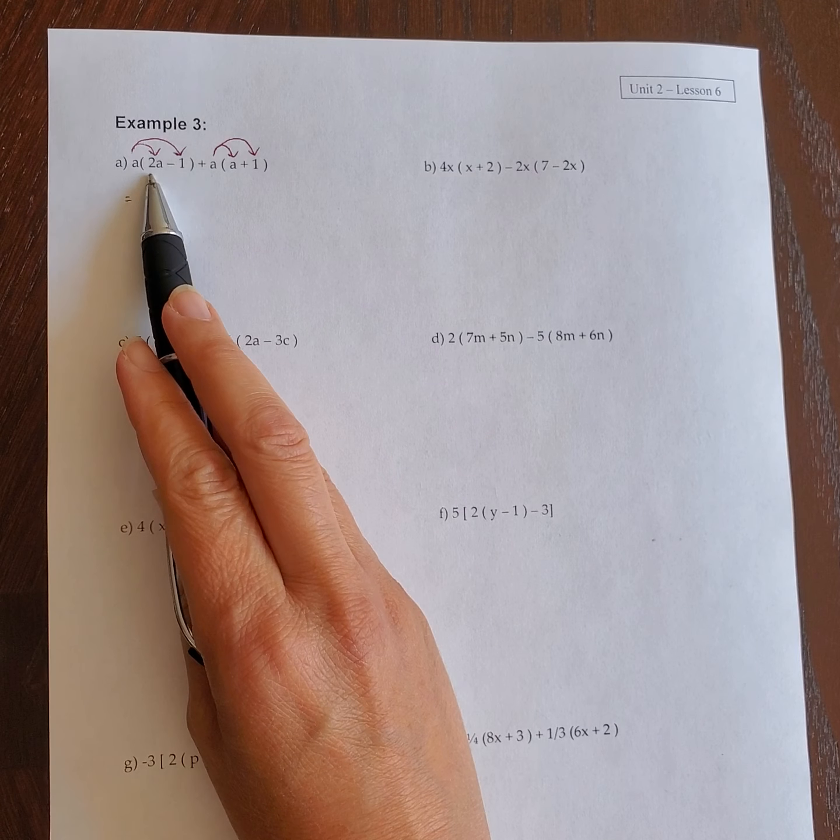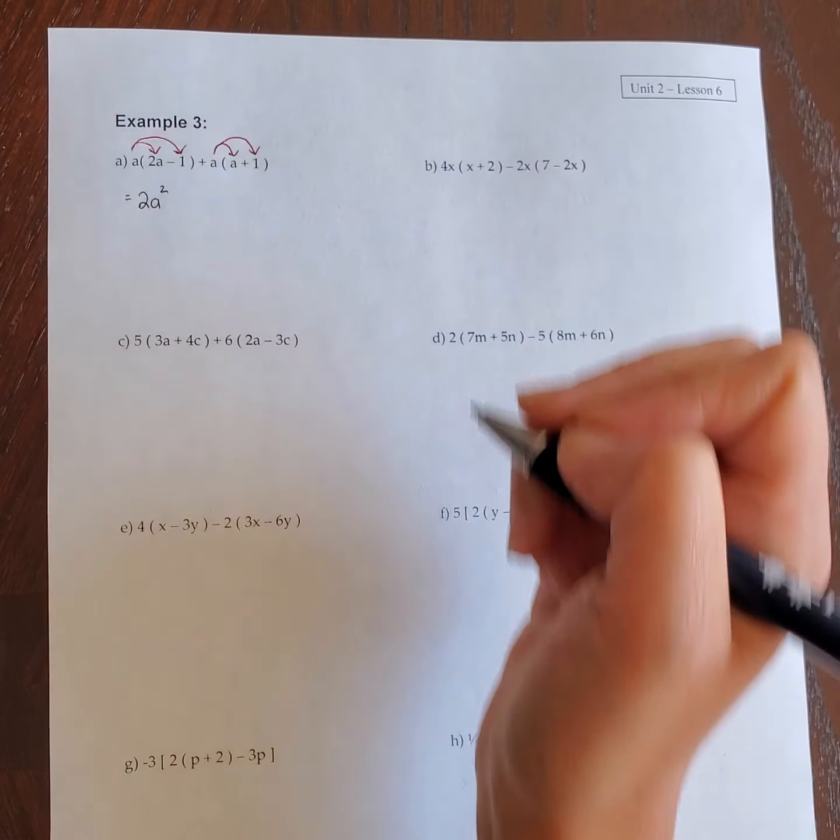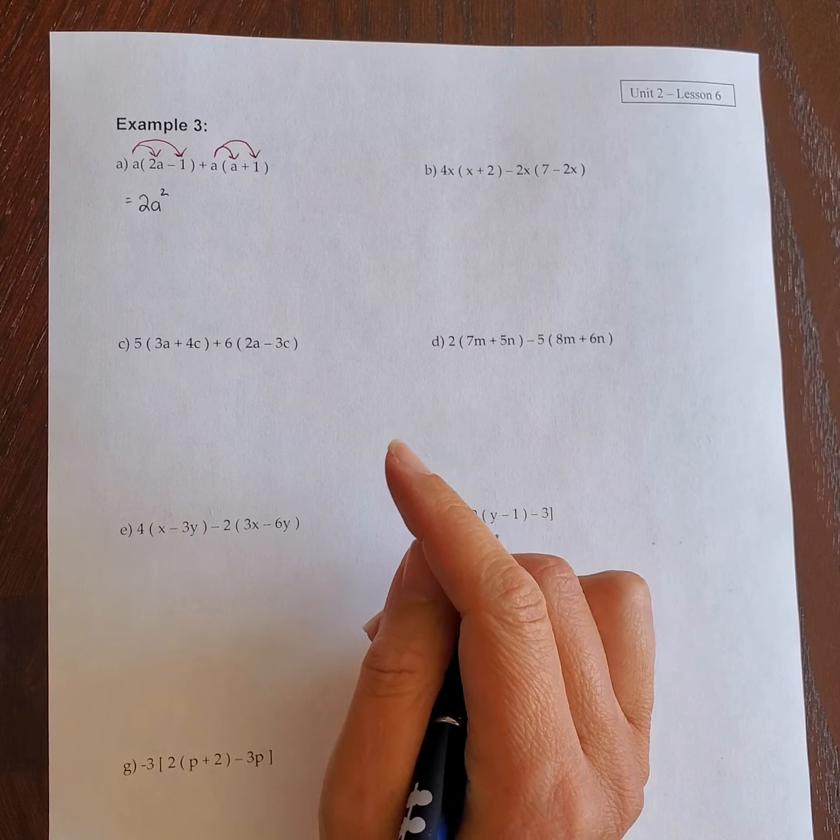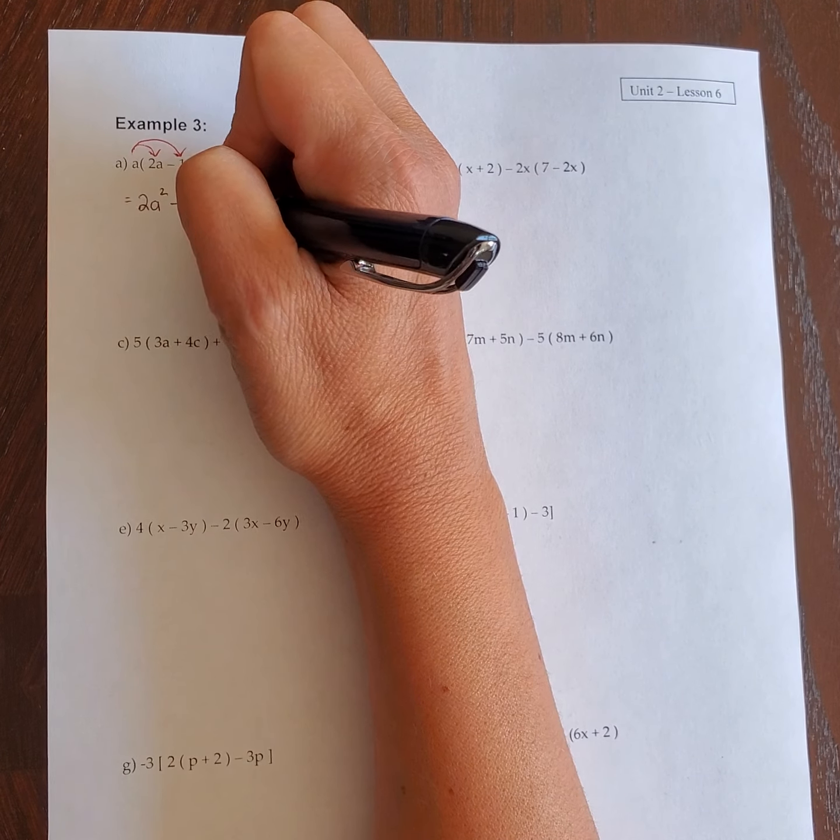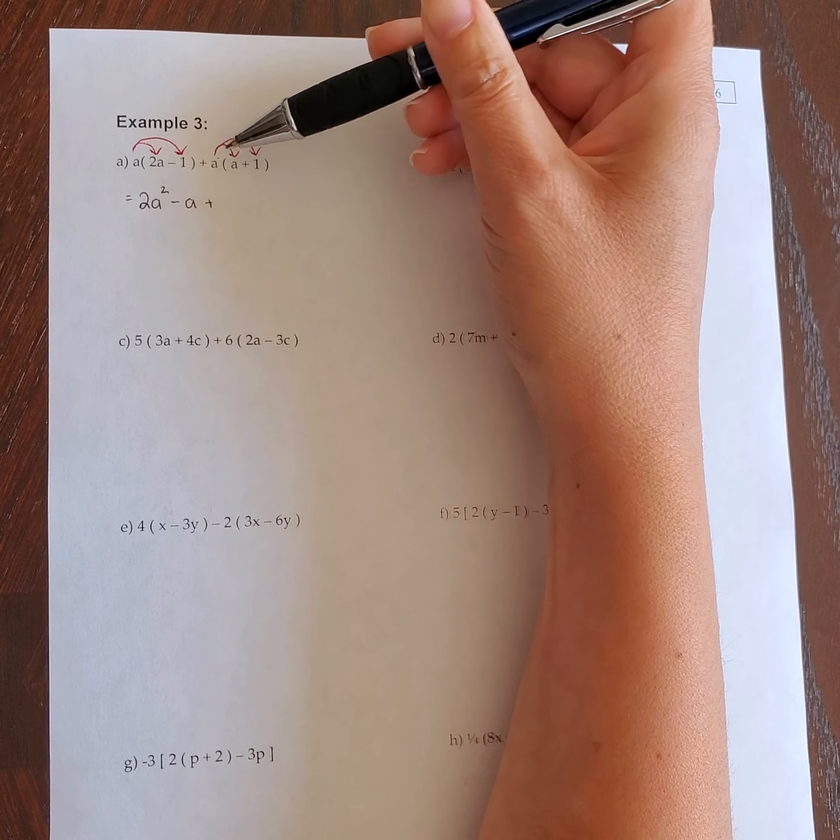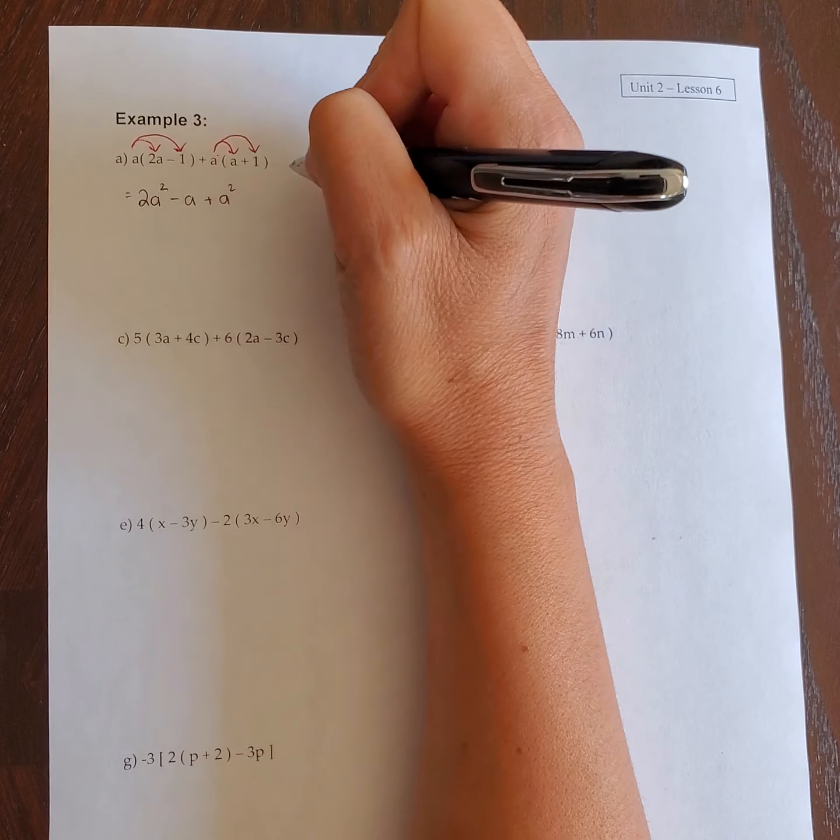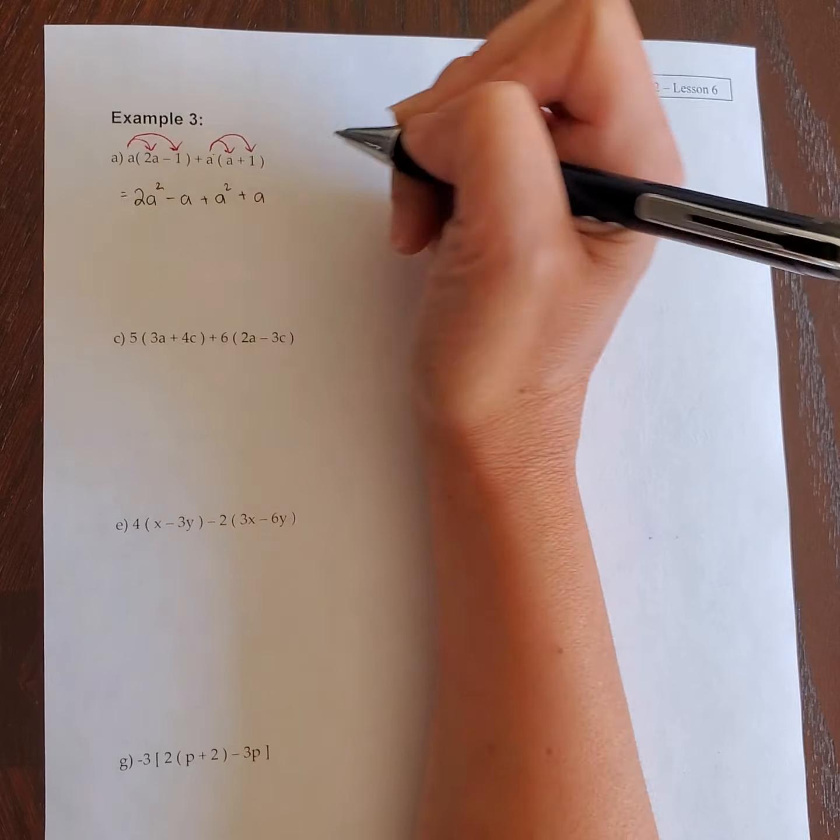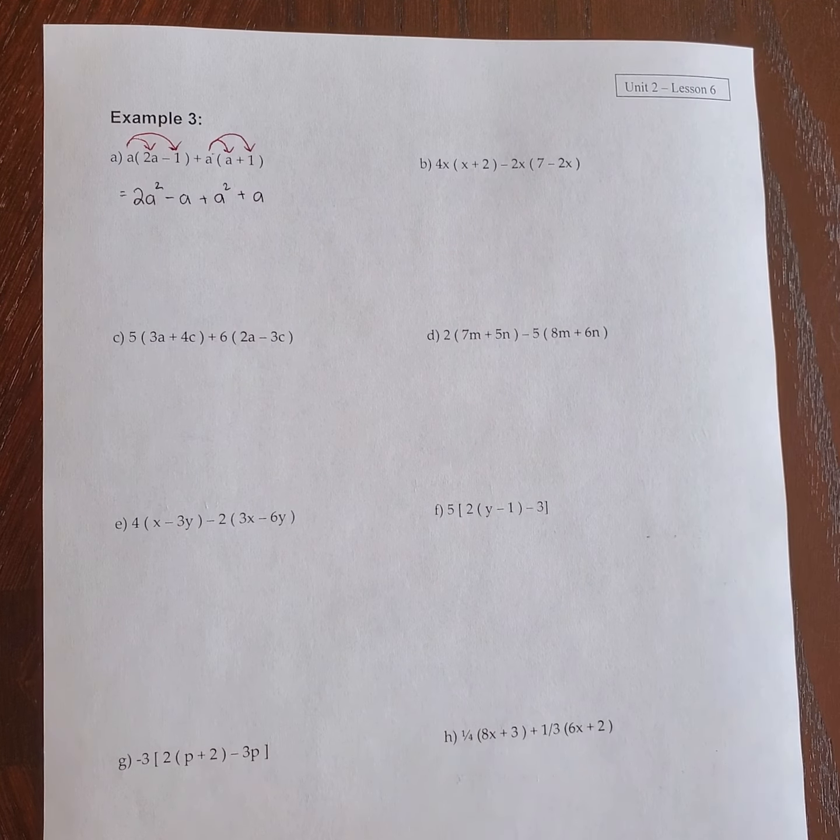So a times 2a is 2a squared. An a times an a, you're adding the exponents, so 1 plus 1 is 2. a times negative 1 is negative a, plus a times a, so a times a is a squared, a times 1 is a. After you've done that, you can start collecting your like terms.